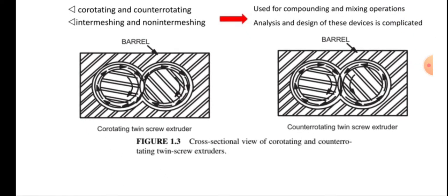The figure shows the cross-sectional view of the co-rotating and counter-rotating twin screw extruders. It is shown in the figure: barrel and co-rotating twin screw extruders. Again, barrel is given for counter-rotating twin screw extruders.